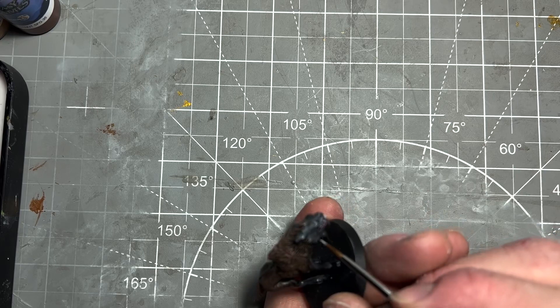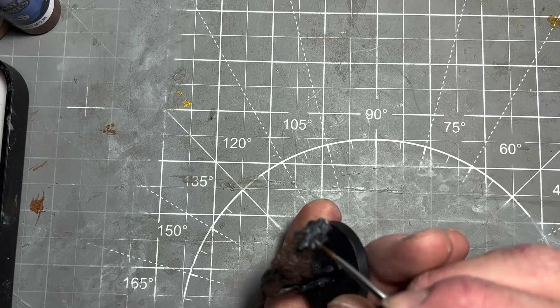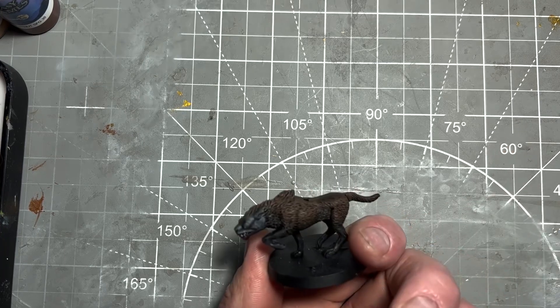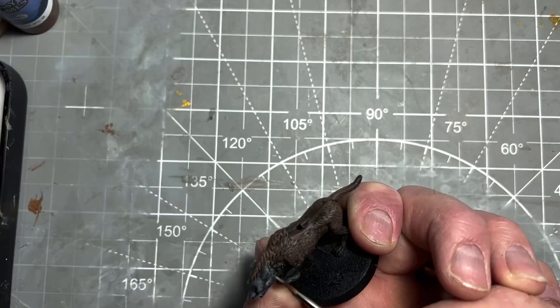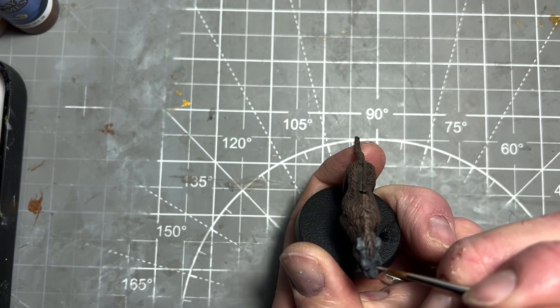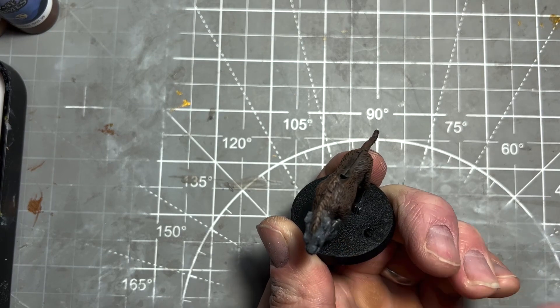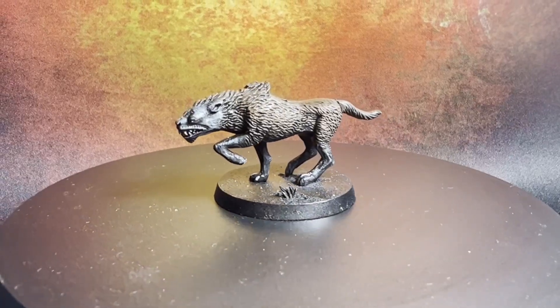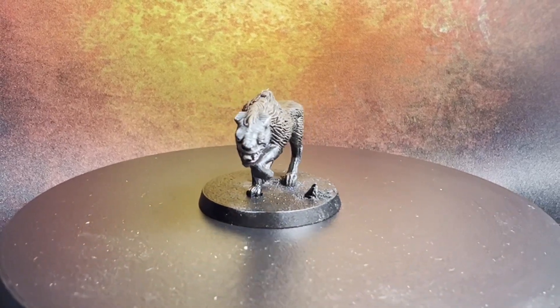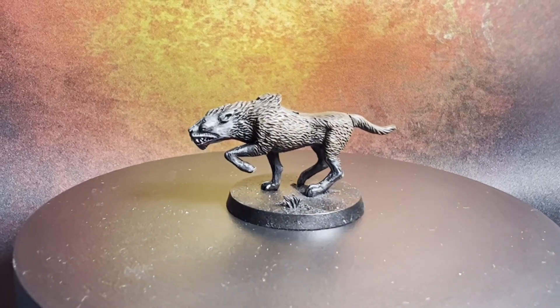The final step is highlighting the skin using a scratchy highlight technique on raised areas—around the face, by the eyes, and the front legs where light would catch. Use a small brush with very light line strokes. Once the highlights are done, all that's needed is to base the model and paint the base rim black. As it stands, this model is finished.